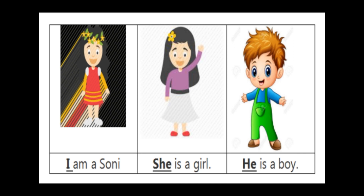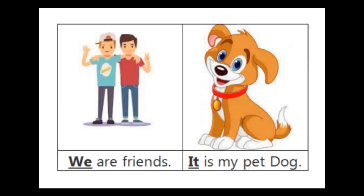Next is the picture of a boy. Yahan pe boy ka picture diya hai, kya likha hai? 'He is a boy.' Yeh boy hai, isliye H-E, he likha hai. Then next they are giving you two friends pictures. The sentence is 'We are friends.' Dono ko mention karne ke liye, both mention karne ke liye W-E, we are friends.